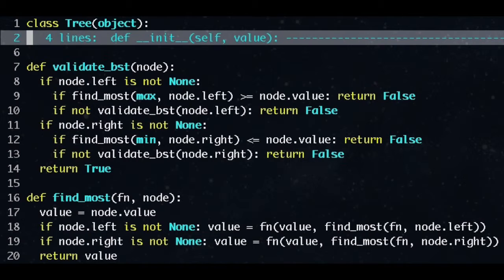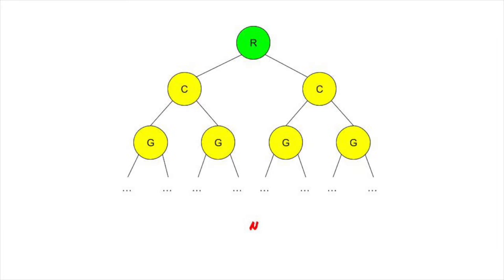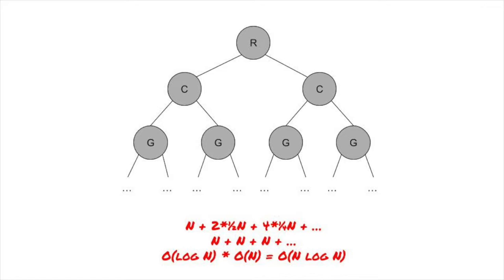What's the runtime complexity of this? It's O of n log n for a balanced tree. For the root, we check every node in the tree in either the minimum or maximum functions. Then, for the root's two children, we check half the tree again. For the four grandchildren, we check a quarter of the tree and so on. Each of these levels totals to O of n, and there are log n levels in the balanced binary tree.